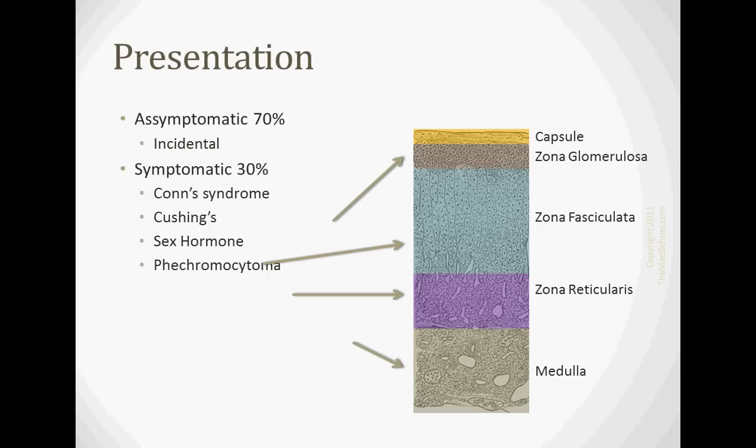Cushing syndrome is going to result if you have an adenoma of the zona fasciculata where we're making our cortisol. So classic signs of Cushing syndrome we've talked about before, our moon face, you generally will have thinning of the skin and stretch marks on the skin.